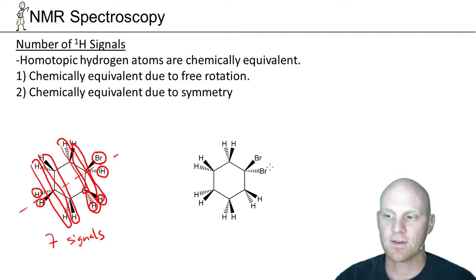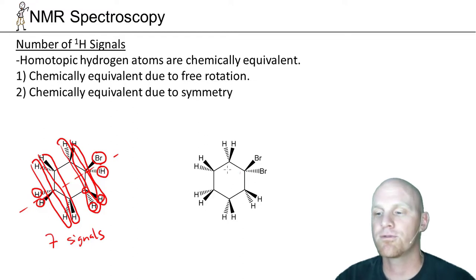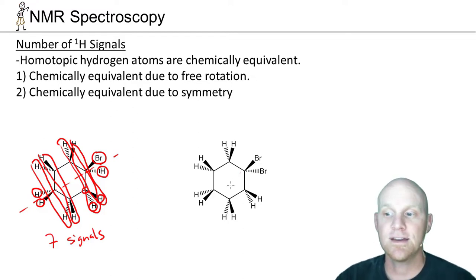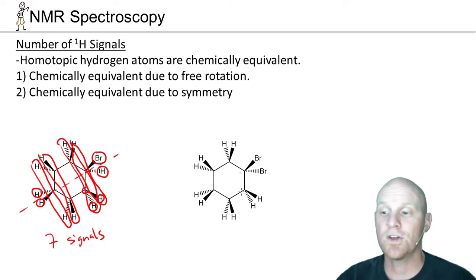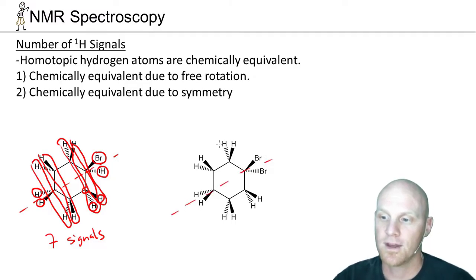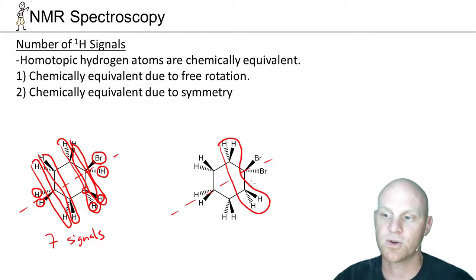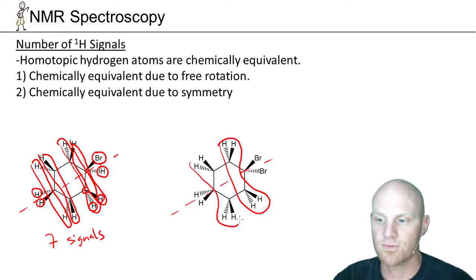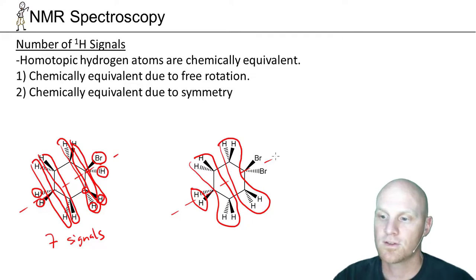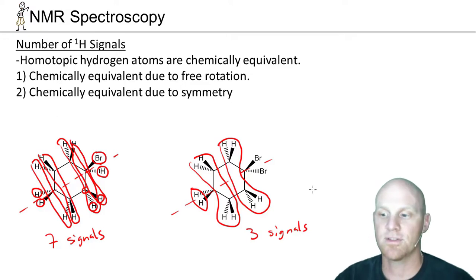In the next example, if you look at all the wedged bonds — bromine and five hydrogens — and all the dashed bonds — bromine on the same carbon and five hydrogens — they all match. So what's in front of the molecule is exactly the same as what's behind it, and there is front-to-back symmetry. The wedged and dashed hydrogens on the same carbon are now equivalent. Combined with the plane of symmetry down the middle, all equivalent groups pair up, and we end up with only three signals.